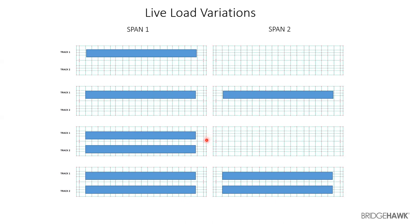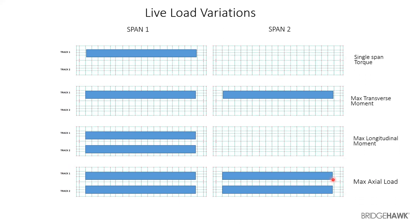Case three: two trains running neck to neck, simultaneously on span number one, but no train on span number two. Case four: all tracks on both track one and track two are completely occupied by trains. This enables us to understand what would be the possible governing load we would be designing for. Every single load combination gives a different moment value, which is a governing load case in itself.